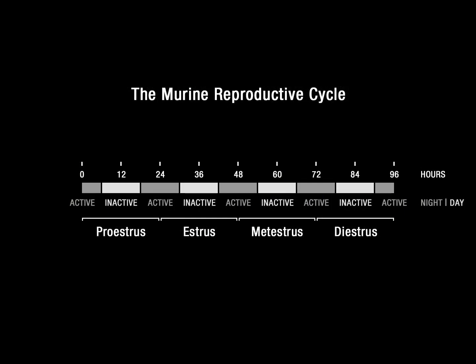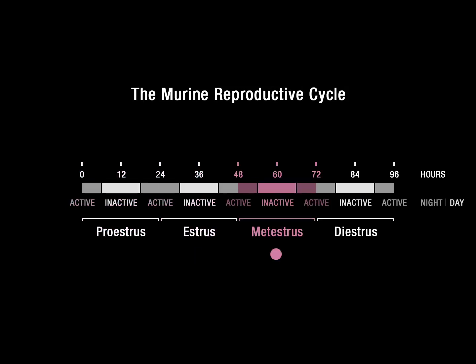The murine reproductive or estrus cycle is divided into four stages: proestrus, estrus, metestrus, and diestrus.